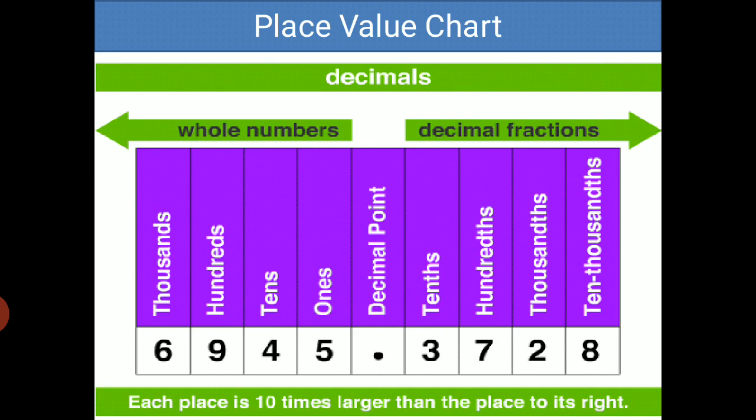Now there is a place value chart for decimals. First of all, there is a decimal point in between. Then there is 1, 10, 100, 1000, and so on. These are whole numbers. Then after the decimal point, on the right hand side, there is 1/10, 1/100, 1/1000, 1/10000. These are decimal fractions. Each place is 10 times larger than the place to its right.